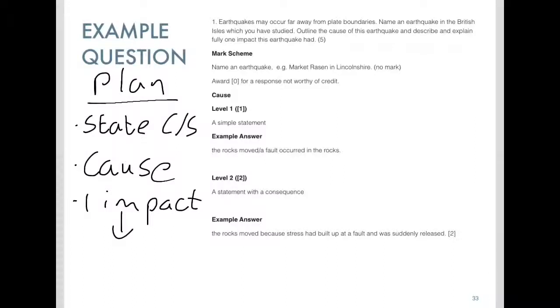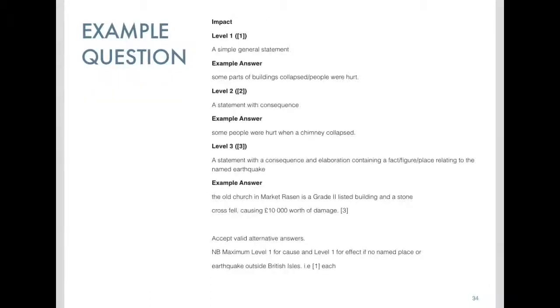If you come down here and then look at the mark scheme. Cause. It is divided up into two sections: obviously the cause and then the describe and explain of the impact. So for cause we would name the Market Rasen in Lincolnshire. And for the cause Level 2, the rocks moved because stress had built up at a fault and was suddenly released.